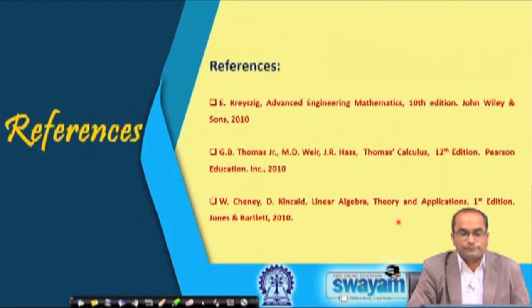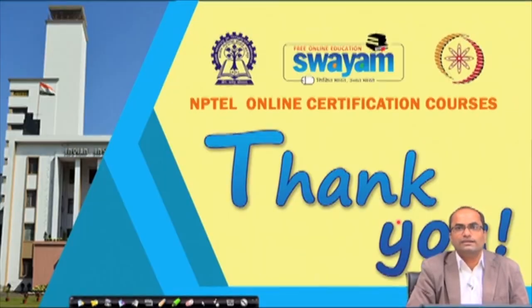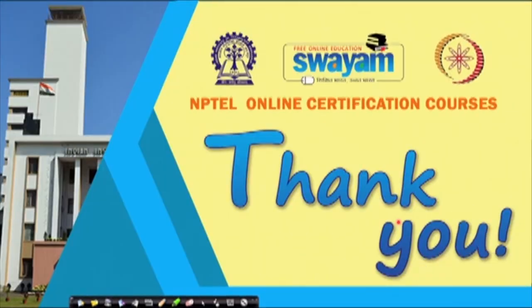In summary, eigenvectors corresponding to distinct eigenvalues are linearly independent, and a real matrix may have complex eigenvalues and eigenvectors which occur as complex conjugate pairs. These are the references used. Thank you for your attention.